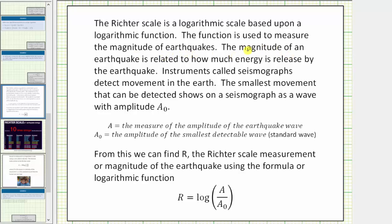The magnitude of an earthquake is related to how much energy is released by the earthquake. Instruments called seismographs detect movement in the earth. The smallest movement that can be detected shows on a seismograph as a wave with amplitude A₀.